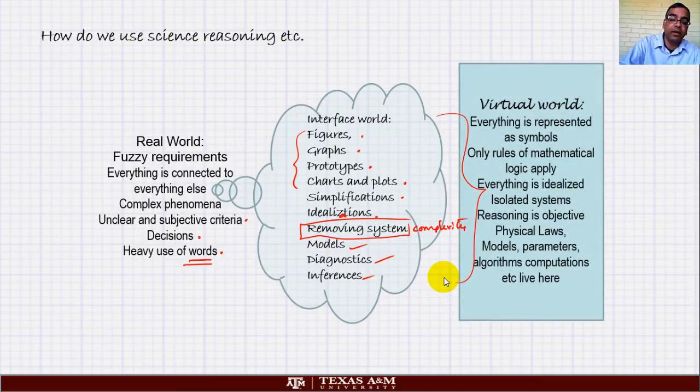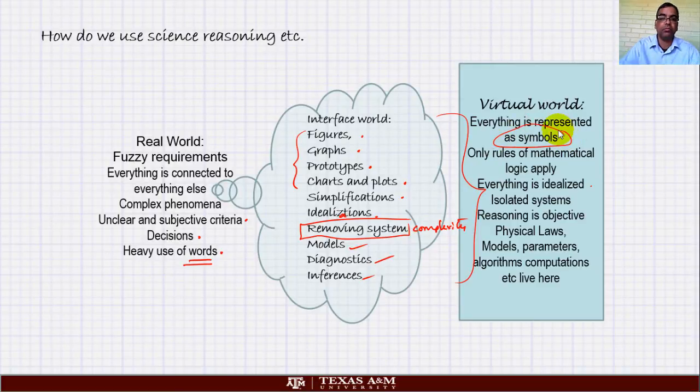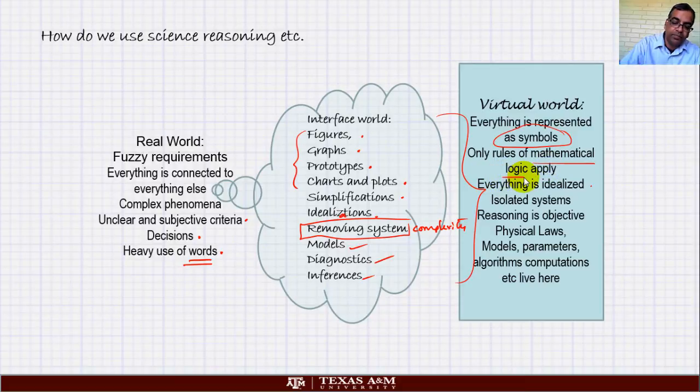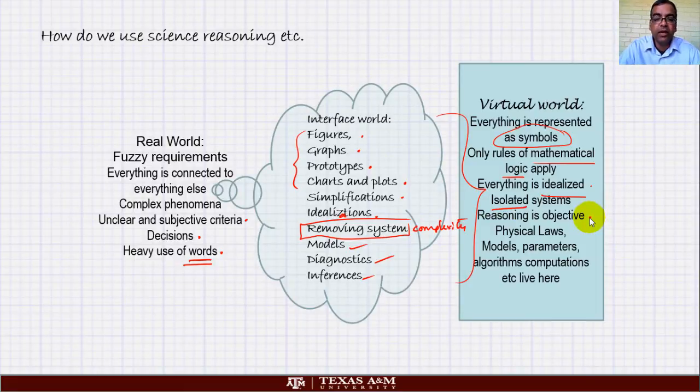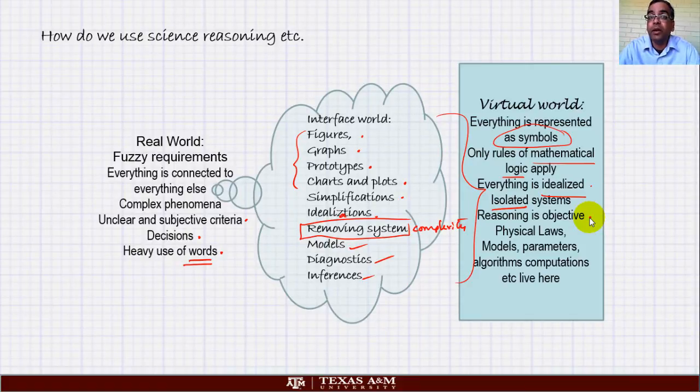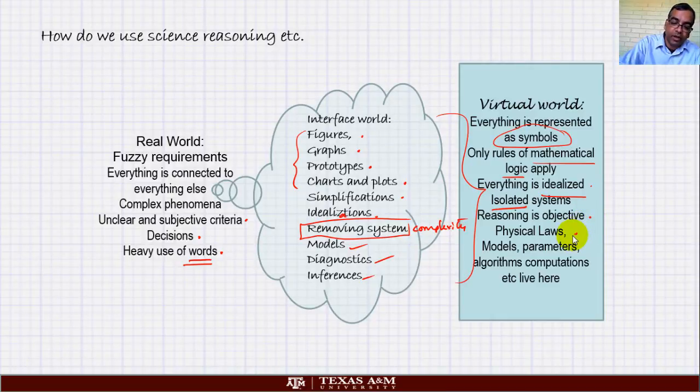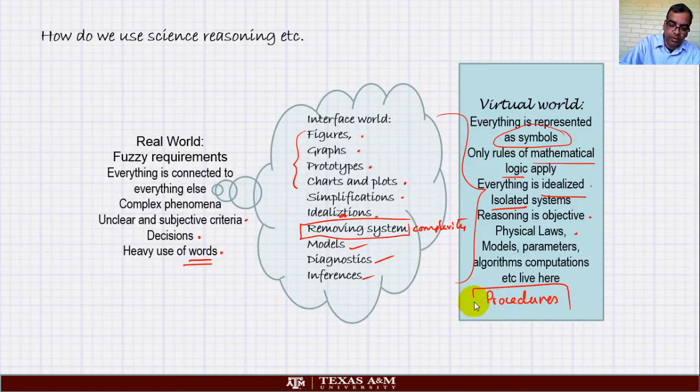Which is called a virtual world. Here everything is represented as symbols. Only rules of mathematical logic apply here. Everything is idealized. The idea is symbolic representation and rules of mathematics, idealization, isolation of system, so I will remove it from the connection so that it is easier for me to look at the system. The reasoning is objective because of the fact that it is based on mathematical logic and it is the same throughout the world, although it can represent only certain forms of reasoning but it does that very well. This is where physical laws are used, models are used, parameters, algorithms, computations, all these things, procedures.